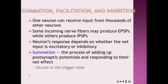One neuron can receive input from thousands of other neurons. Some incoming neural fibers may produce EPSPs while others produce IPSPs. The neuron's response depends on whether the net input is excitatory or inhibitory. Summation is the process of adding up postsynaptic potentials and responding to their net effect, and it occurs in the trigger zone.